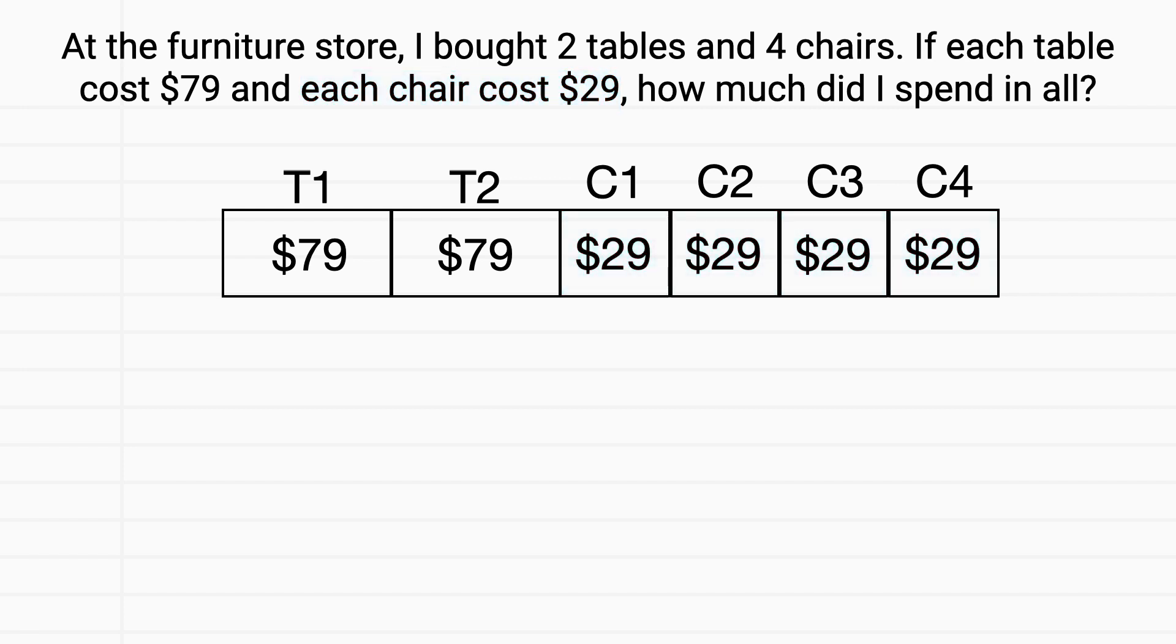Now this is everything I bought at the store. And I need to figure out how much did this all cost in total. One way I could do this is by thinking about my tables and chairs separately. When I think about my tables, I realized that I had two tables, and each one cost $79.